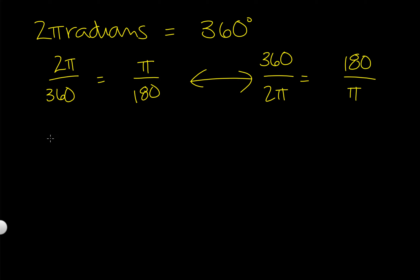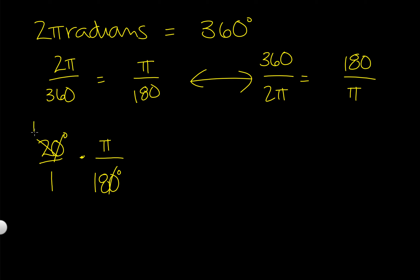So if we get something like 20 degrees and we want to know what this is in radians, remember that we can multiply it by π radians over 180 degrees. Then we can cancel what we can — the zeros go, 2 and 18 can become 1 and 9. And what that gives us is π over 9 radians.